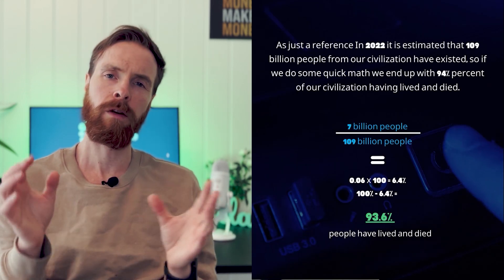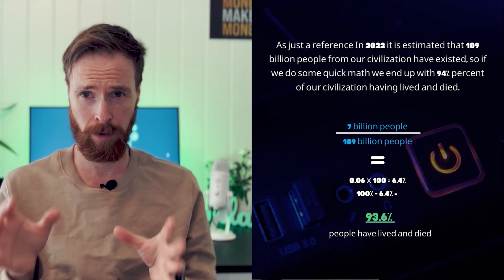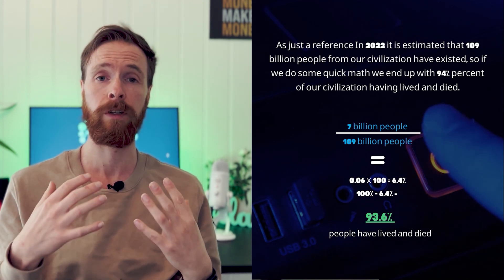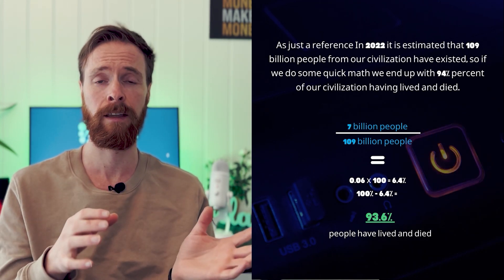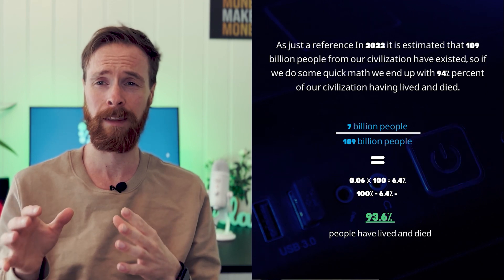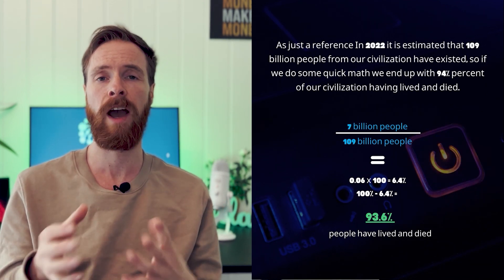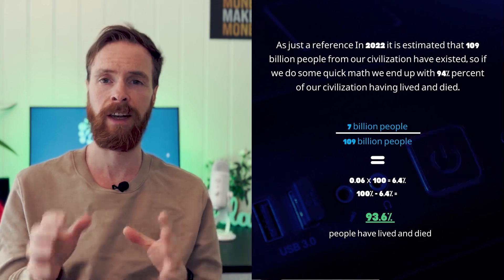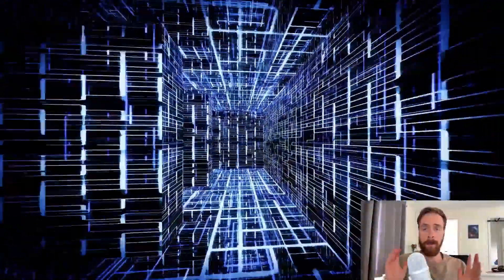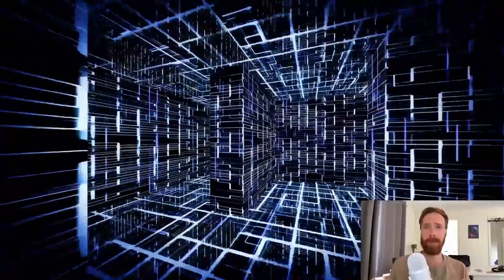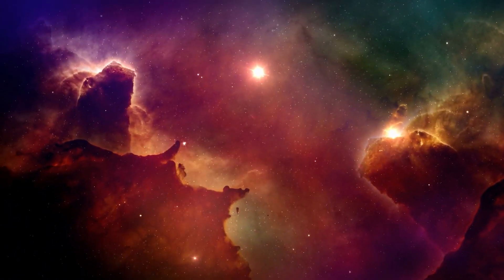So as just a reference, in 2022 it is estimated that 109 billion people from our civilization have existed. So if we do some quick math, we end up with 94 percent of our civilization having lived and died. So that means that the vast majority of people will be simulated rather than non-simulated, and on that condition you are most likely to be one of the simulated people just based on probability.